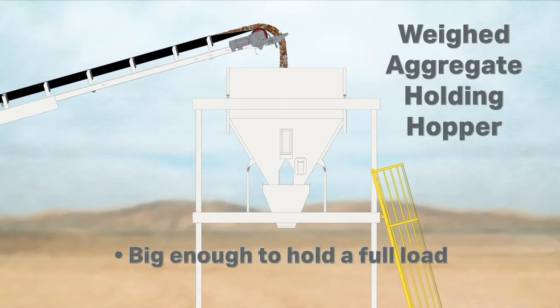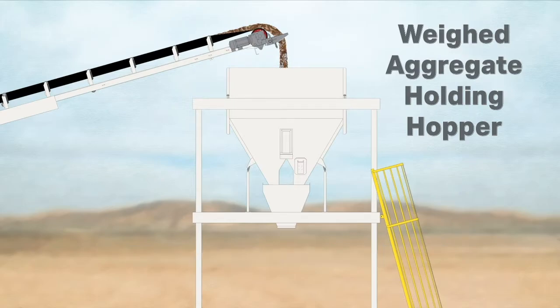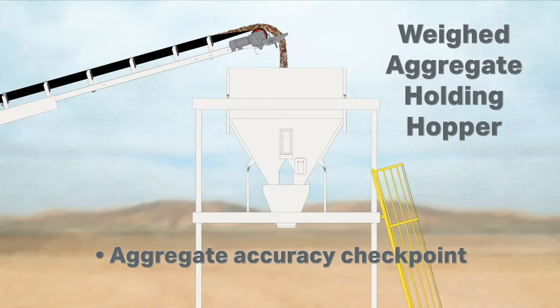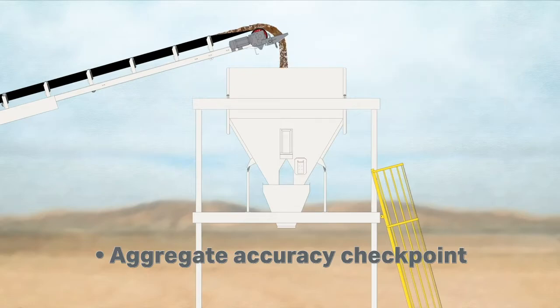The weigh aggregate holding hopper can hold a full load, or it can be used as a verification of the belt feeders, or it can simply be used as a loading discharge.